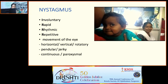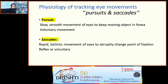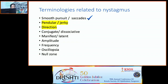To understand nystagmus, you need to understand smooth pursuit and saccades. Pursuit is the slow, smooth movement of the eye to keep a moving object in the fovea — a voluntary movement. Saccade is the rapid, ballistic movement of the eye to abruptly change the point of fixation. For example, if someone is walking slowly across the room, your eyes smoothly follow her (pursuit); then if you need to look somewhere else suddenly, there is a rapid ballistic movement to change the fixation point — that is the saccade.